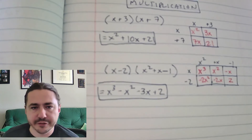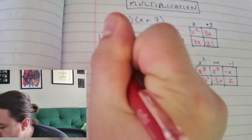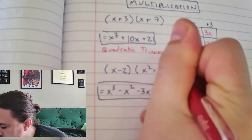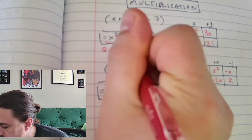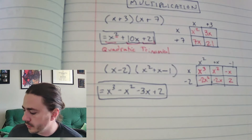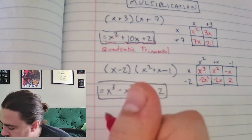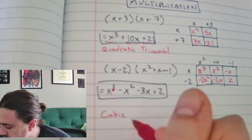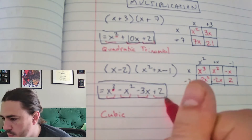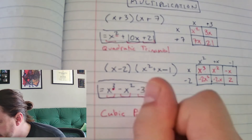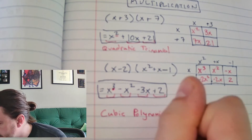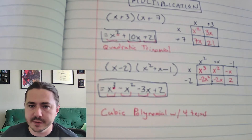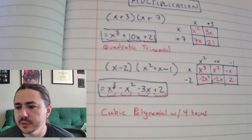In terms of classifying each result: the first multiplication problem ended up being a quadratic trinomial — degree 2 with three terms. The second answer was cubic — degree 3 — and it has four terms. Since we have more than three terms, we don't really have a special name for it; it's just a polynomial with four terms.